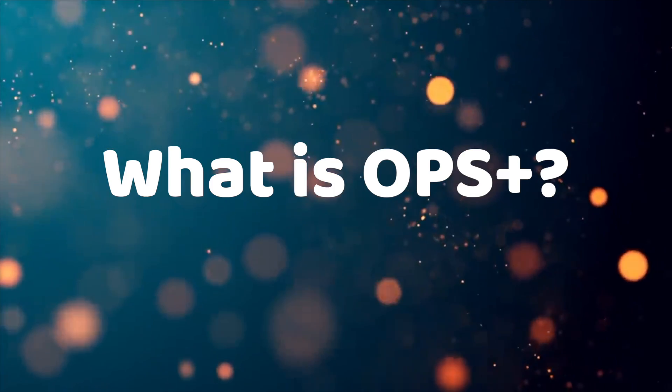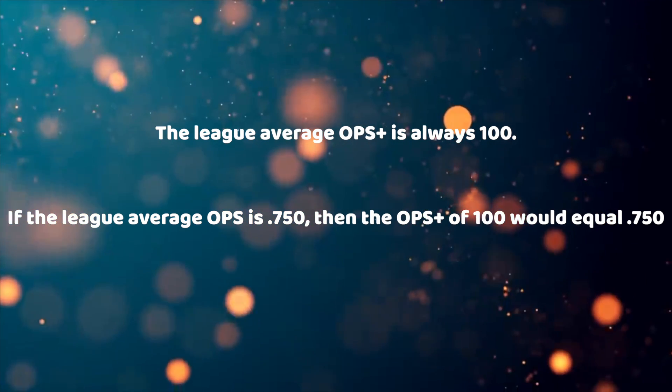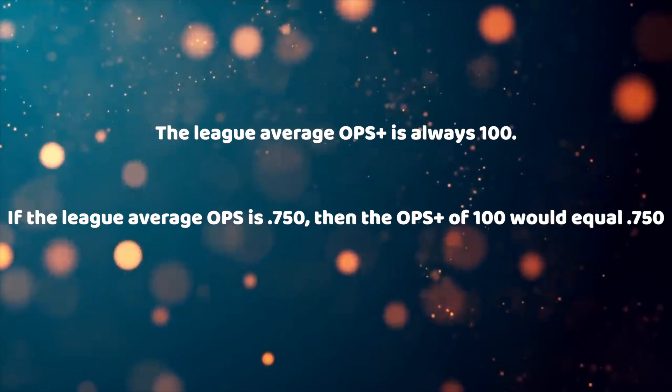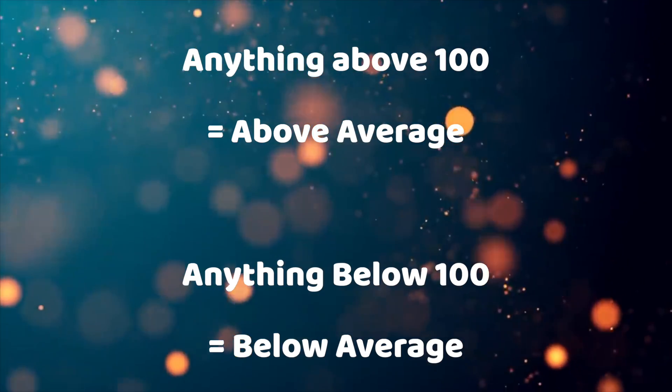There's another statistic different from OPS called OPS Plus. OPS Plus is a better way of measuring a player's performance — it's a better OPS, really. OPS Plus is the percentage of your OPS compared to the league average OPS. The league average for OPS Plus is always 100. So if the league average OPS is .750, that would equal 100 on the OPS Plus scale. Anything above 100 is considered above average, and anything below 100 is considered below average.